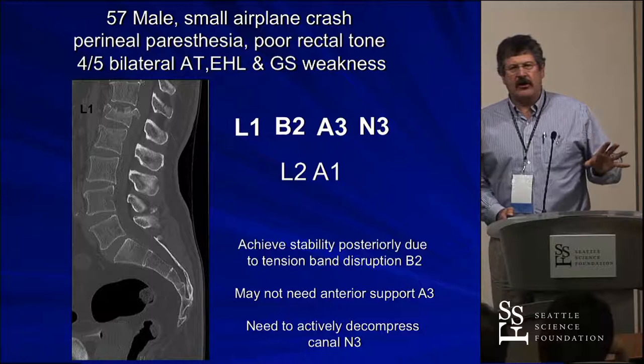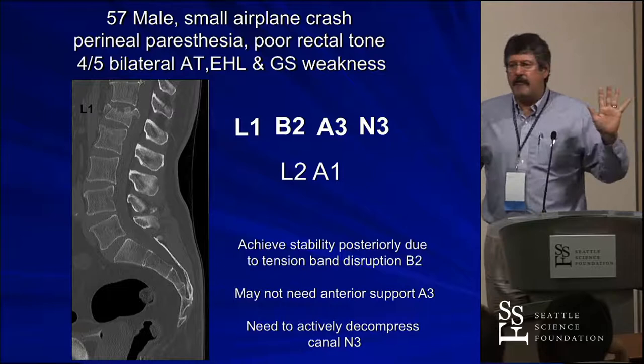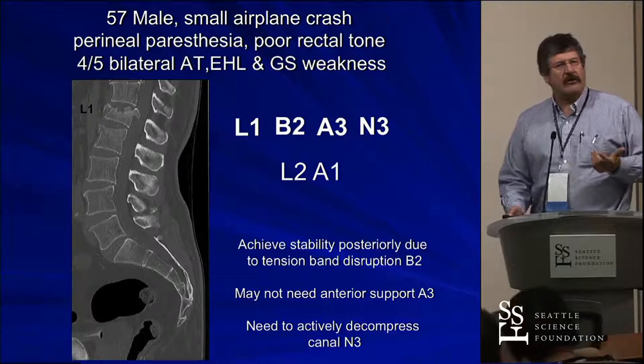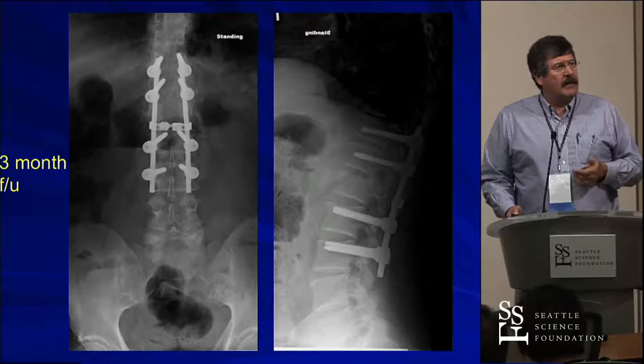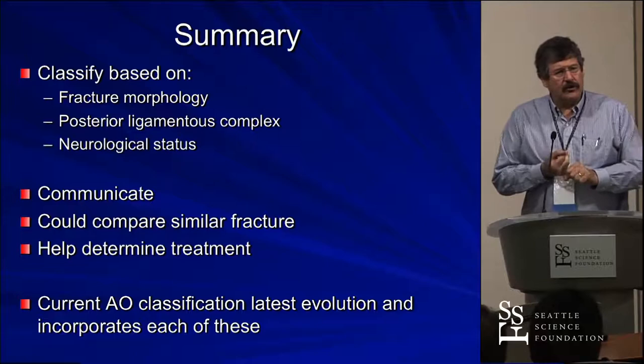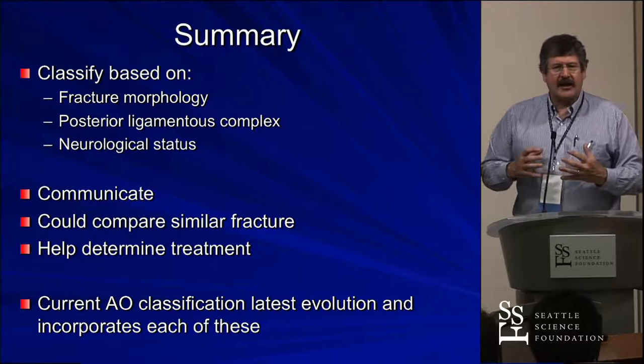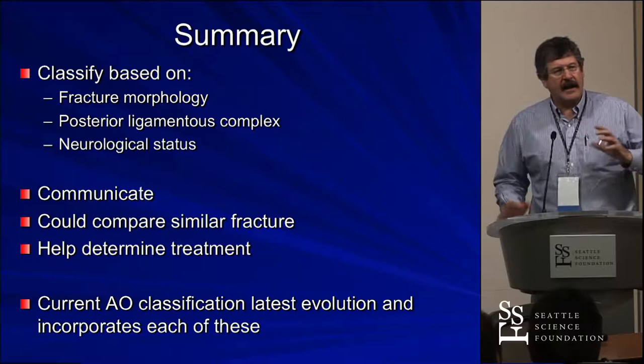At three months the canal is open — we did it all posteriorly. In summary, we want to classify based on fracture morphology, the posterior ligamentous complex, and neurological status. Those are the three important components. It needs to facilitate communication, allow comparison of similar fractures, and help determine treatment. I really think this current AO classification represents where we've finally evolved to. In my opinion, we don't need to do much more at this point unless our treatment changes and dictates a need for change. Thank you.